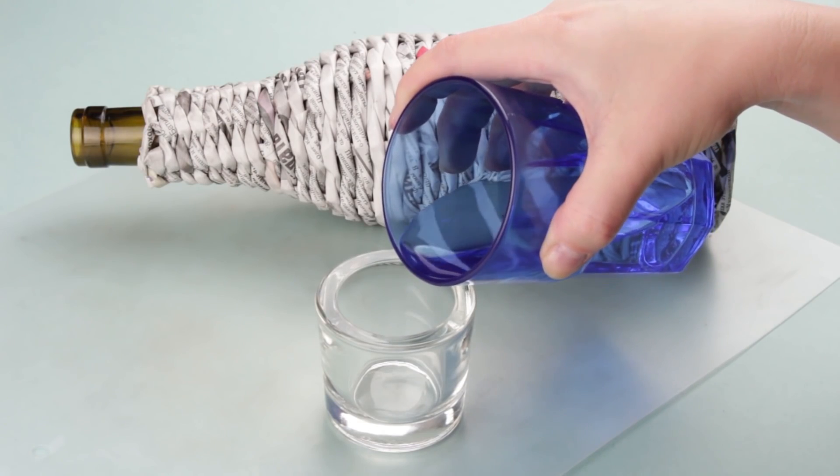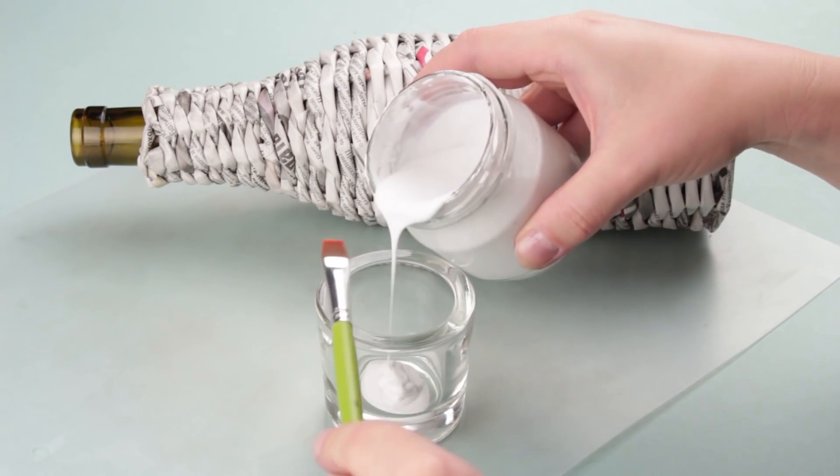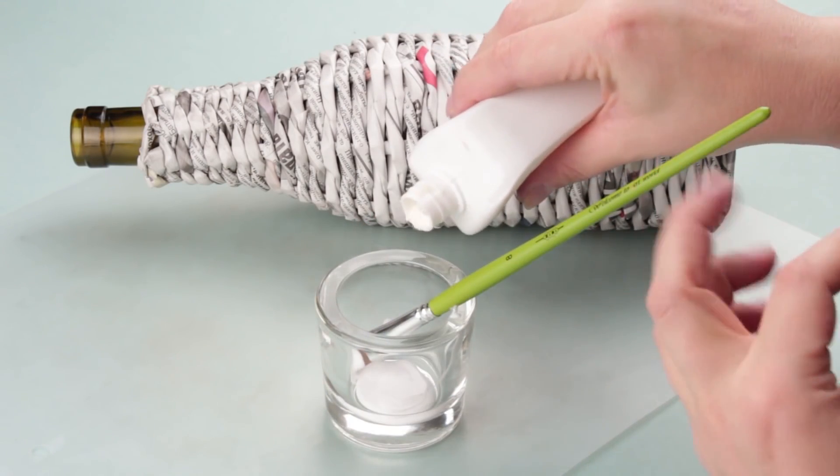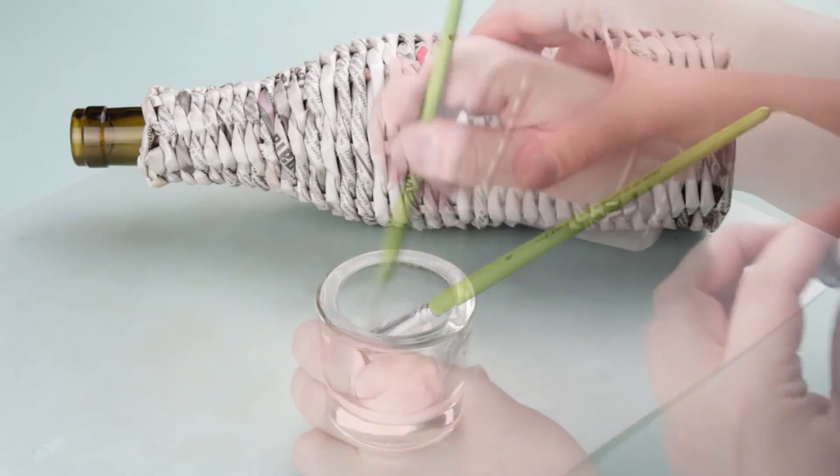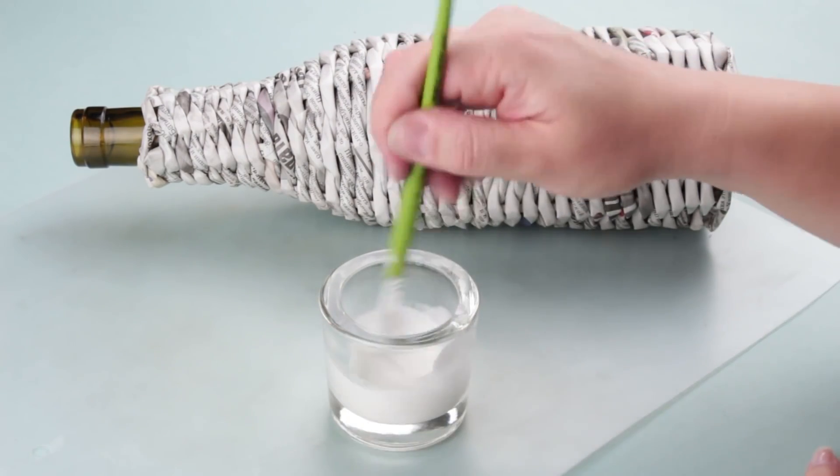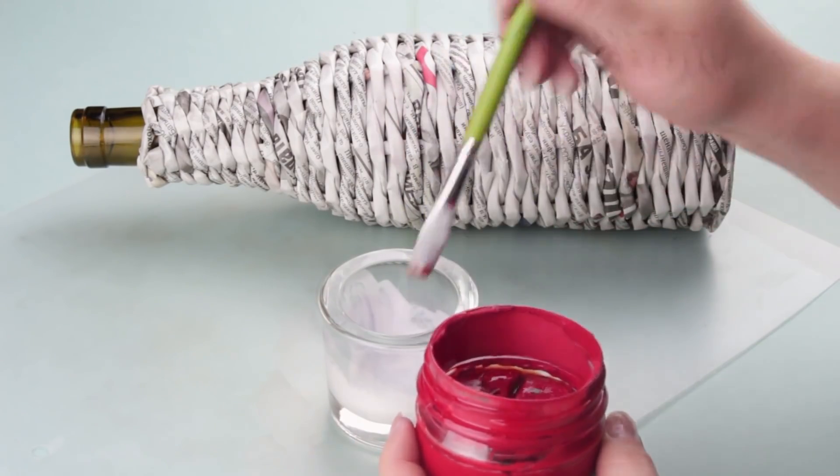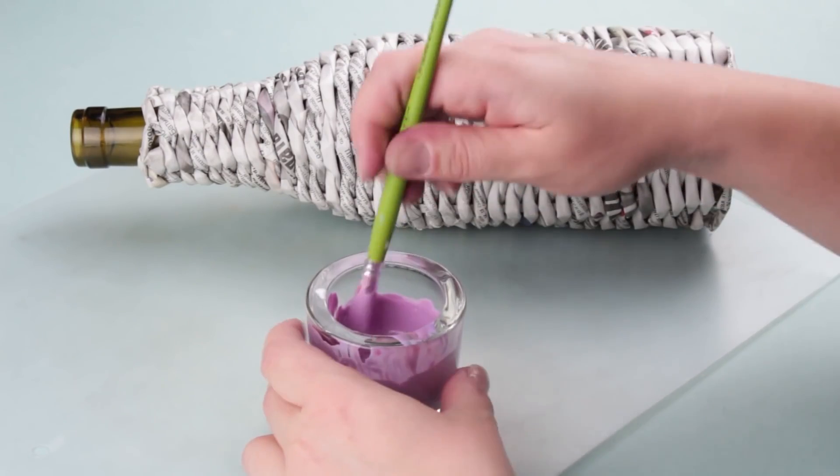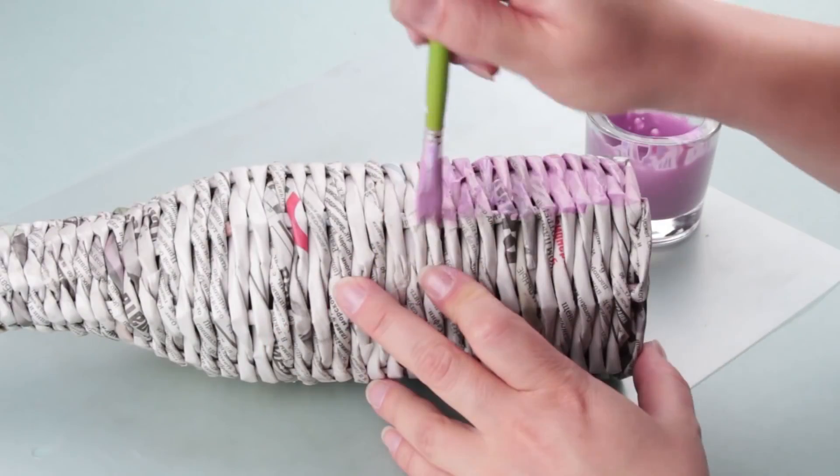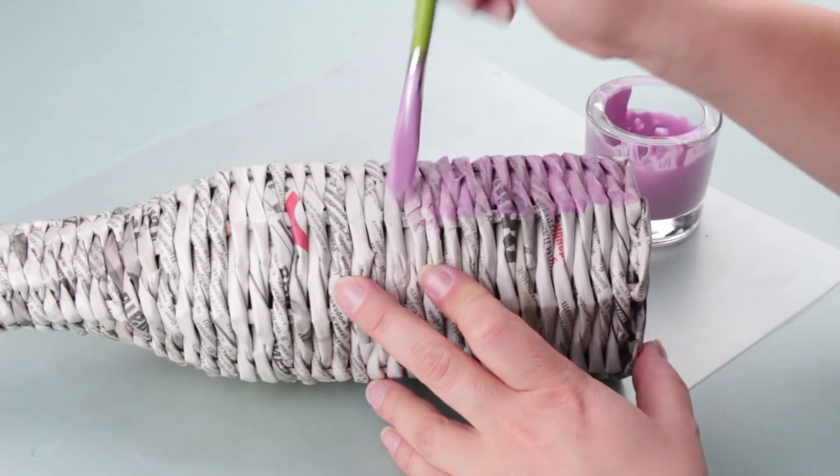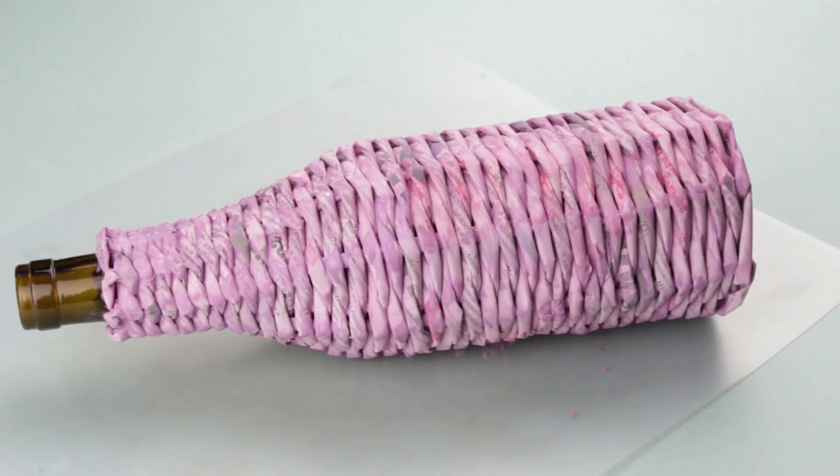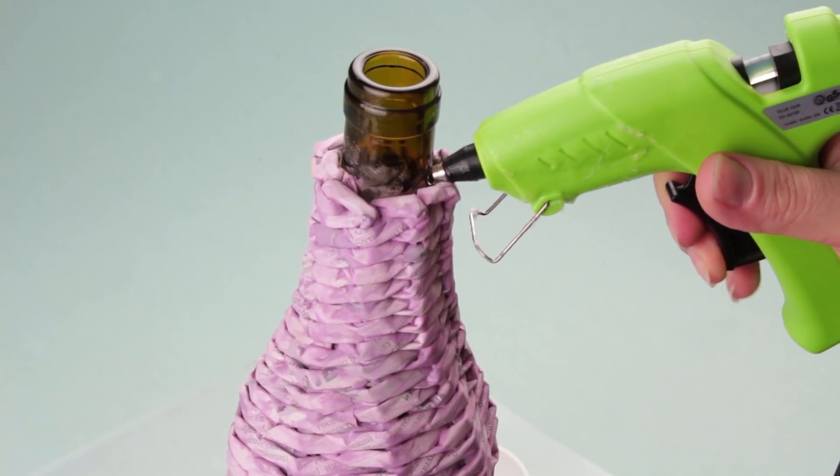Mix equal portions of water, white water-based paint, and white glue. Covering with this mixture will let us omit a ground coat. Add some gouache and mix well. We've got a soft shade of lavender lilac. Paint with a brush. Let dry and add another coat if necessary. Let's cover the bottle neck.